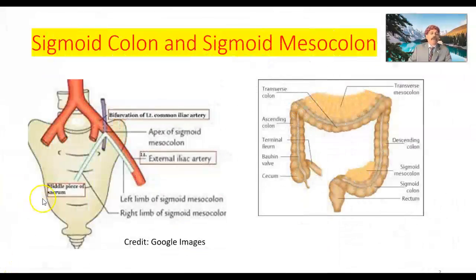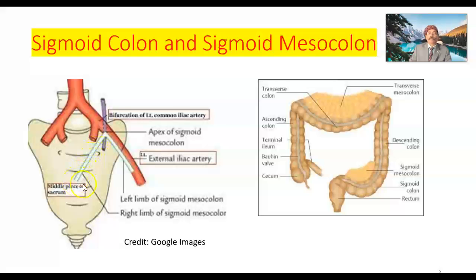Now we are looking at the landmarks. This is the apex of the inverted V, just over the ureter, at the termination of the common iliac artery into the external iliac artery and internal iliac artery. Its left limb covers about the upper half of the external iliac artery. The right limb passes downwards and medially to the level of sacral vertebra 3. This is the sigmoid mesocolon and this is the sigmoid colon, and this is the rectum. So this is the descending colon, then the sigmoid colon — the taenia coli ends up here and the rectum begins here.